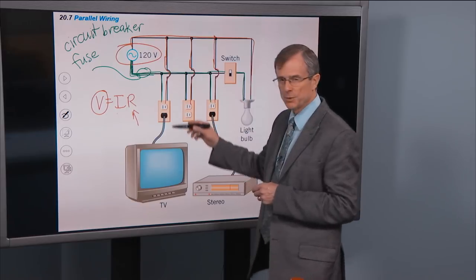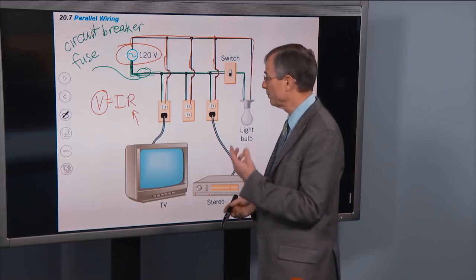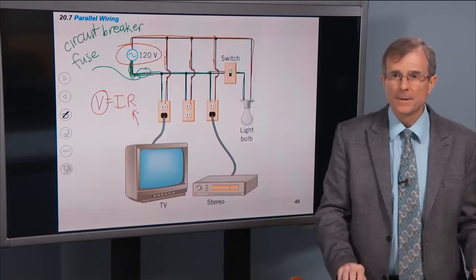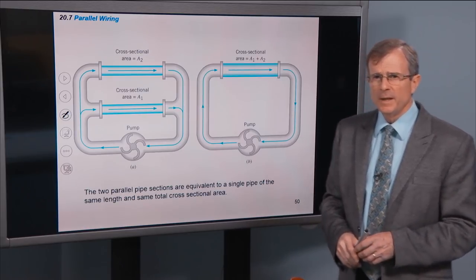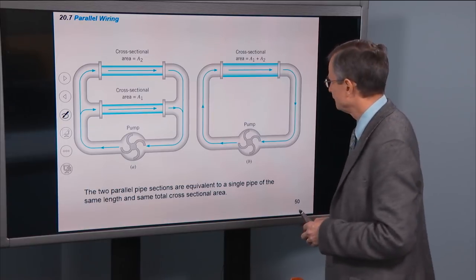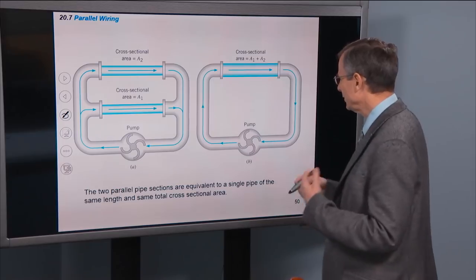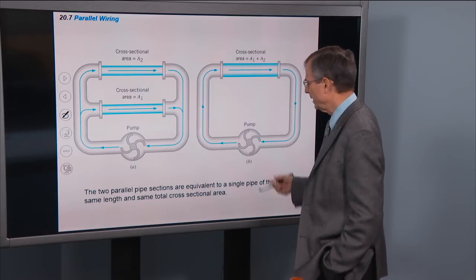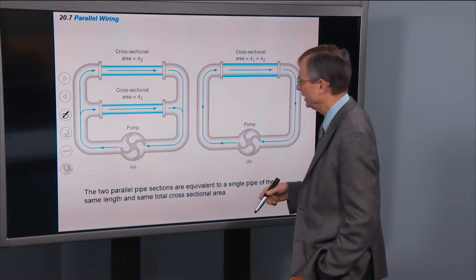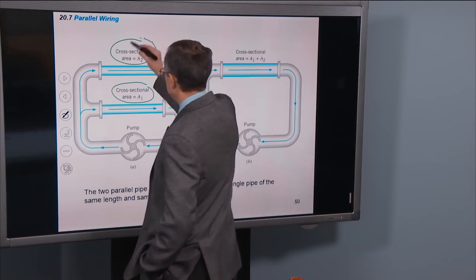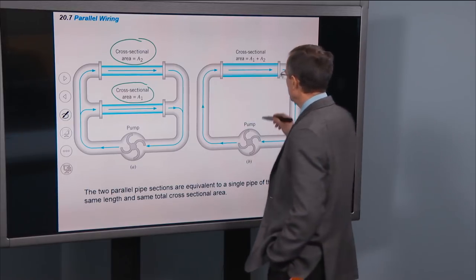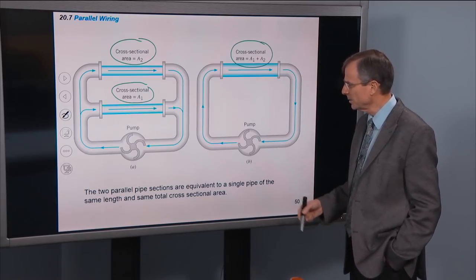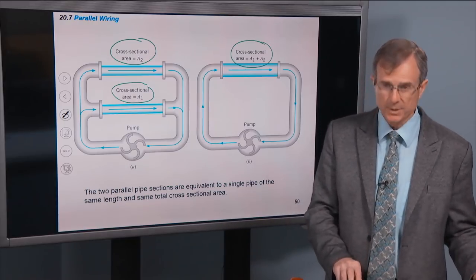You don't want to put the fuse on just an individual switch, because that will only protect that particular switch. You want to protect the wire that's delivering current to all the elements in parallel. This is the hydrodynamic equivalence: two parallel pipe sections are equivalent to a single pipe of the same length and the same total cross-sectional area. Two pipes each with smaller cross-sectional areas A1 and A2, combined, give a bigger cross-section — that's equivalent to what we see with resistors in parallel.